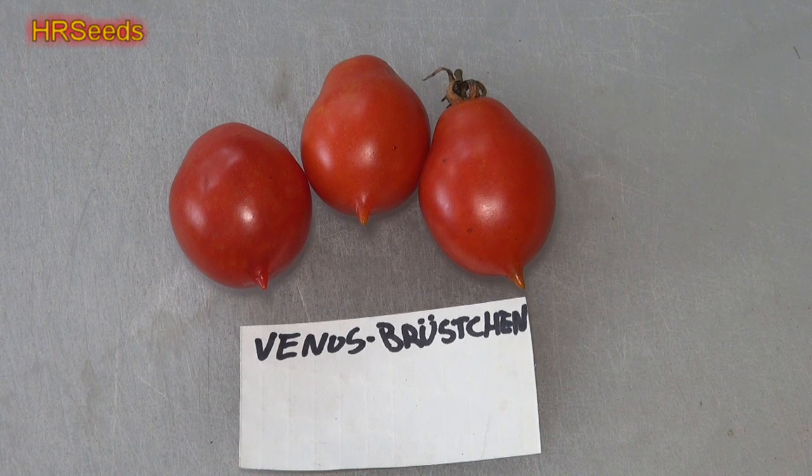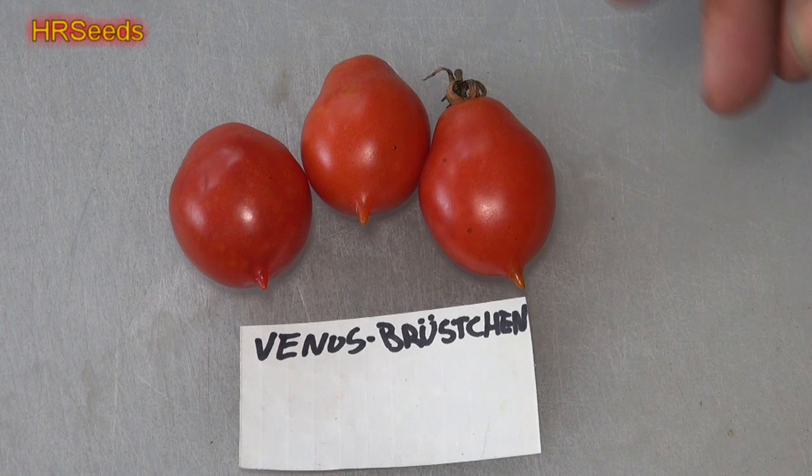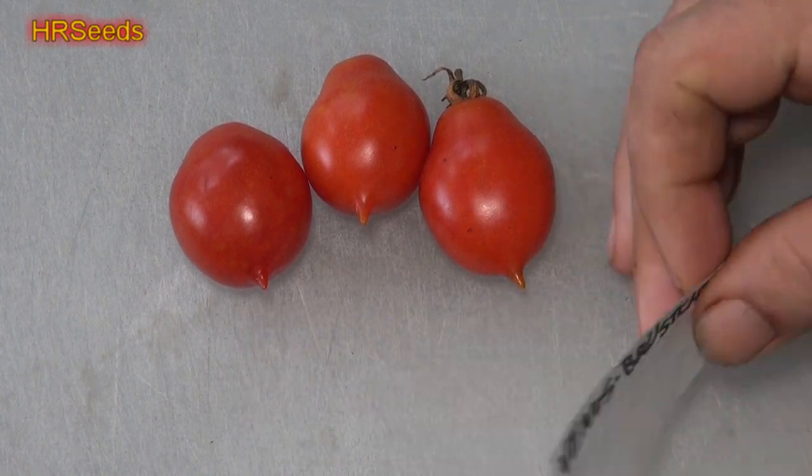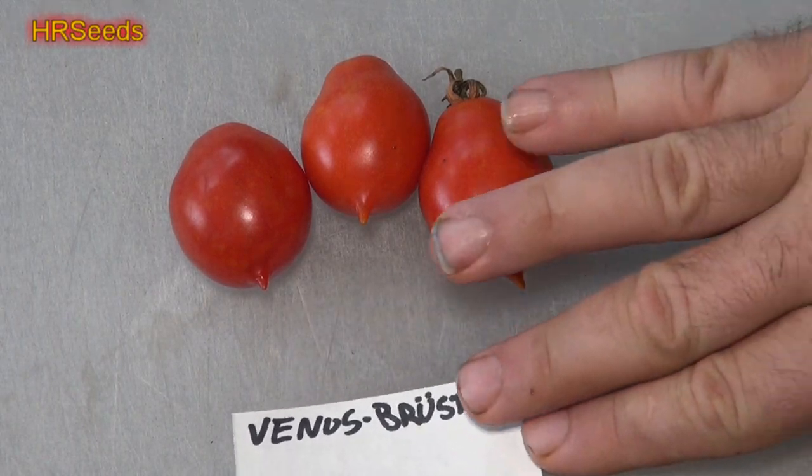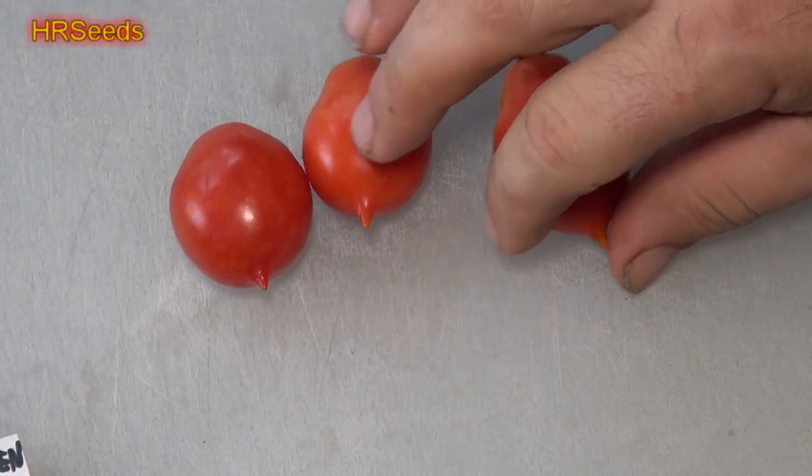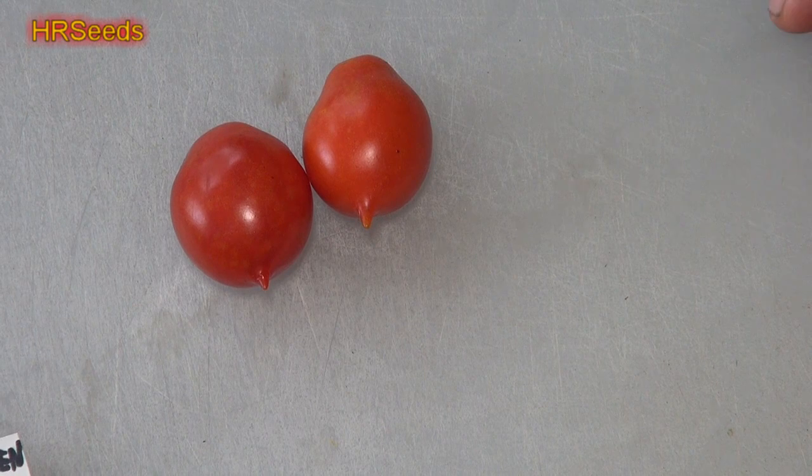Anyway, here it is, the Venus Büstchen. Let's move that off to the side. Let's take one of these tomatoes and give her a cut in half now.